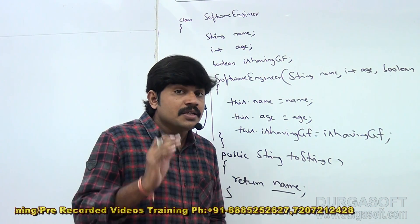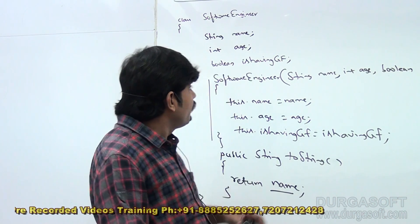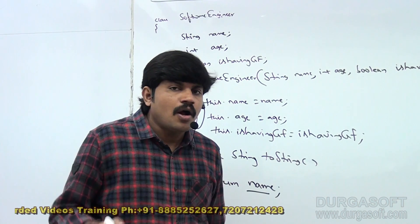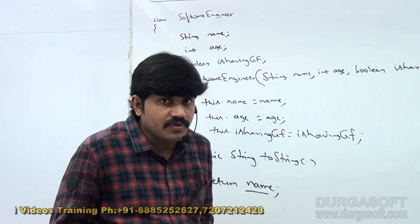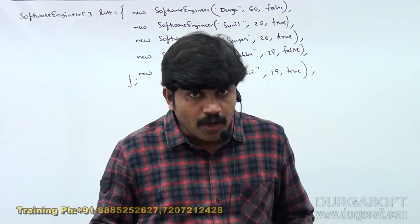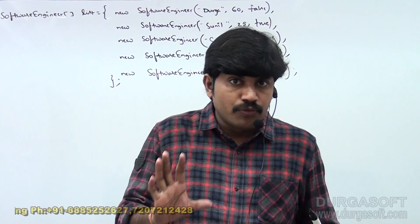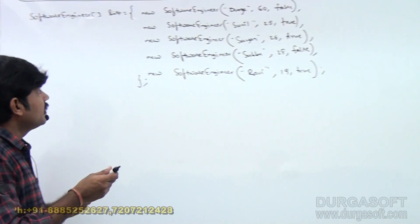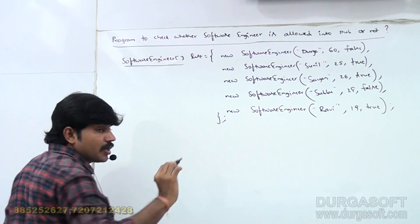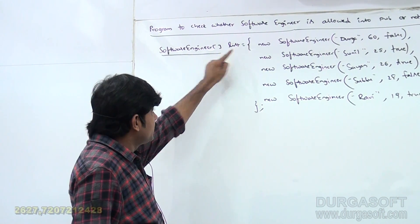Now let me create an array of software engineer objects with these parameters, and then I will write a predicate and show how to apply it to these software engineer objects. We have covered the SoftwareEngineer class. Now observe — I am creating an array list of software engineer objects.